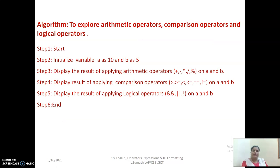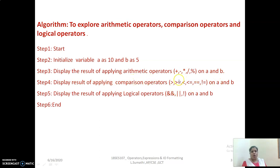As a continuation, we will see what should be the algorithm for a simple program to explore basic arithmetic operators, comparison operators, and logical operators in C. I have to start the program. To explore these, I am going to initialize values for A and B as 10 and 5. Then I am going to display the results after applying arithmetic operators on A and B, then display the result after applying comparison operators on A and B, and then display the result after applying logical operators on A and B.